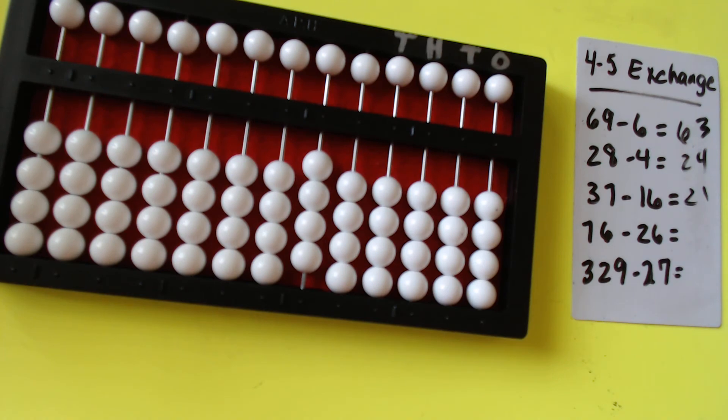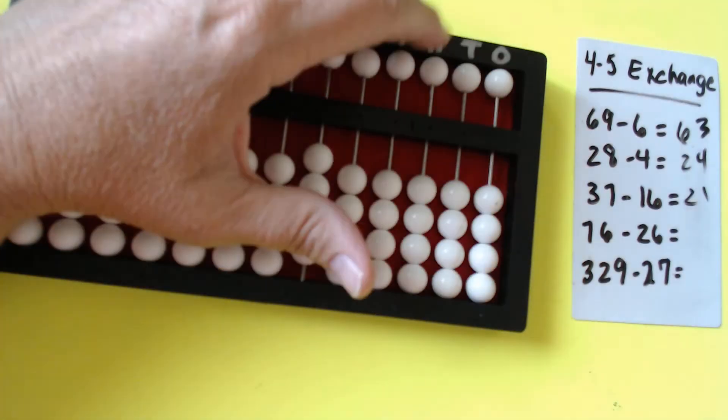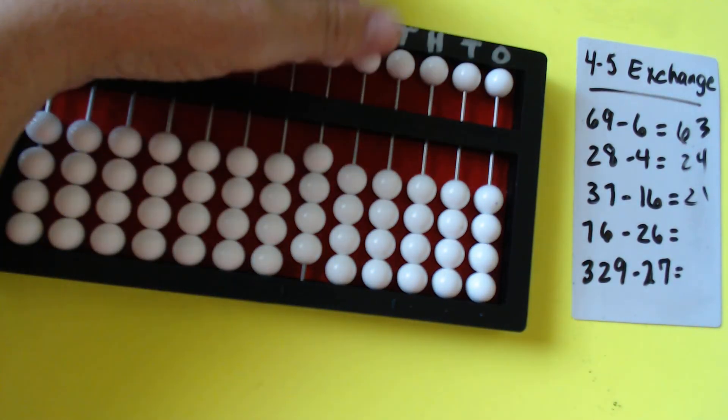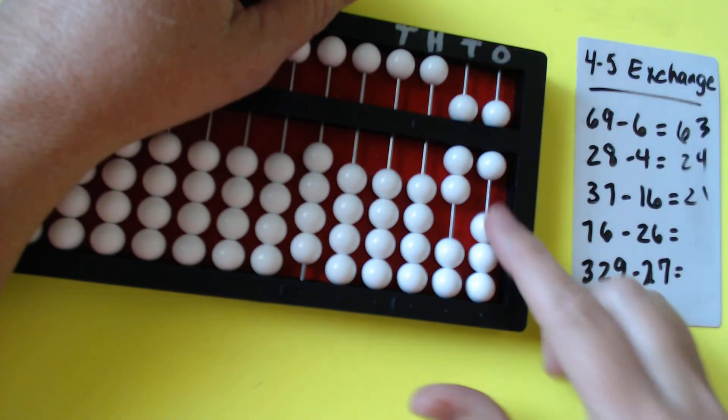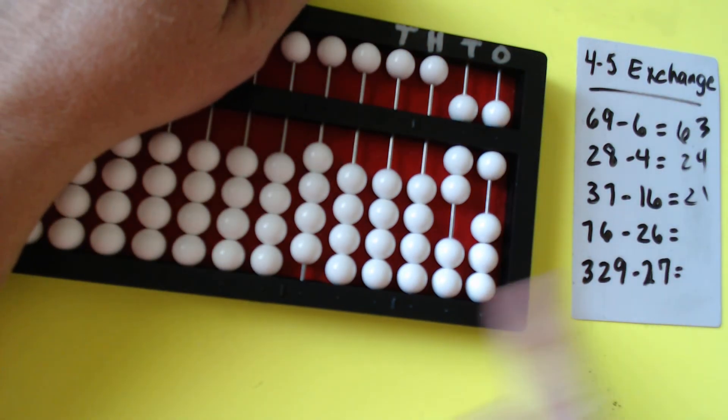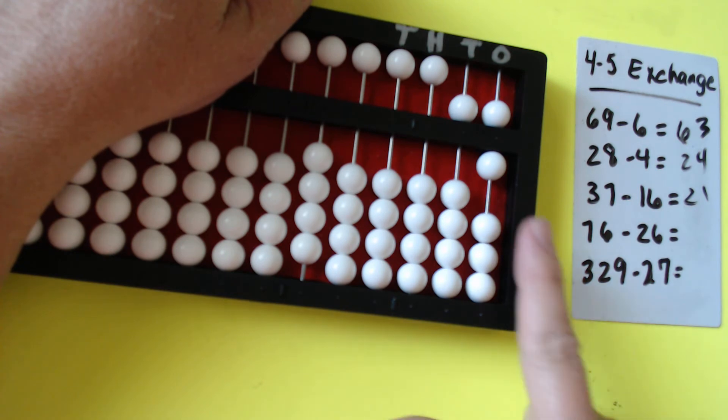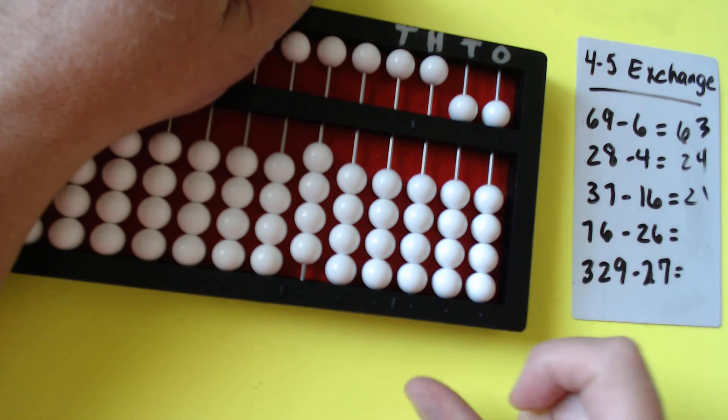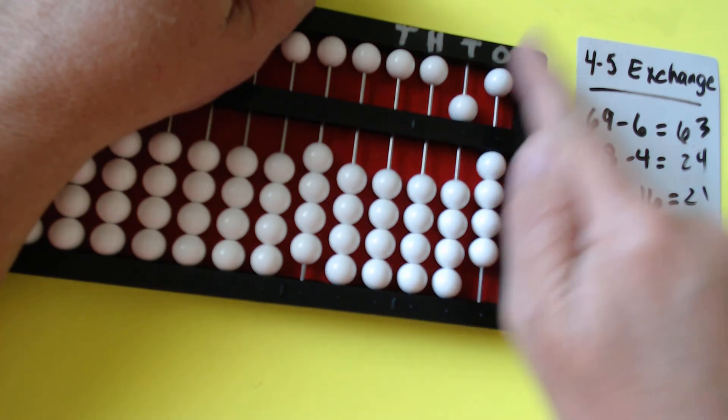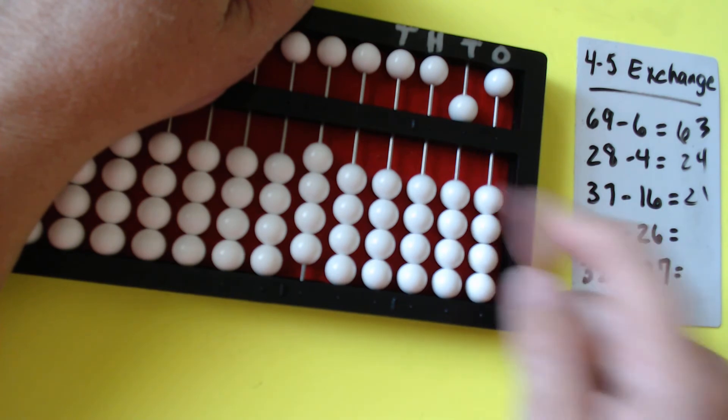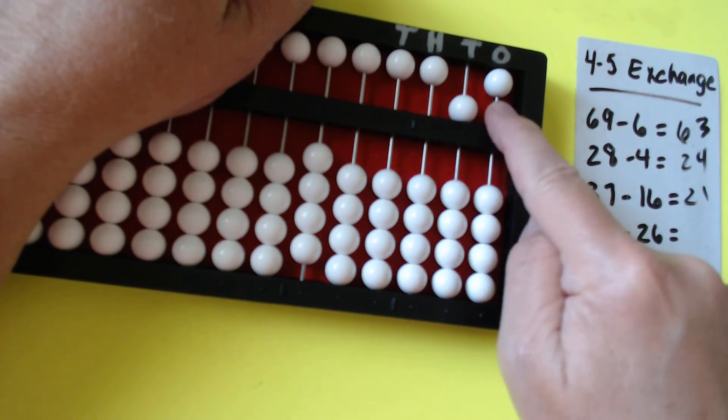76. I had beads falling off. 76 minus 26. The 20 is easy: 1, 10, 20. Now we have to subtract 6: 1, 2, 3, 4, 5, 6. That gives us 5, 0, or 50.